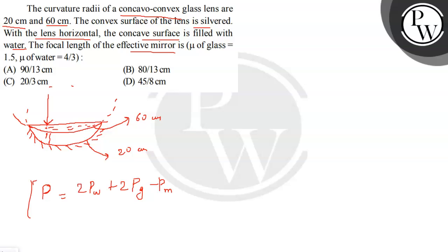So we can write it as one upon the effective focal length will be equal to two upon the focal length of water plus two upon the focal length of glass minus one upon focal length of the mirror. And as you know how to find the focal length, one upon f equals mu minus one into one upon r1 minus one upon r2.